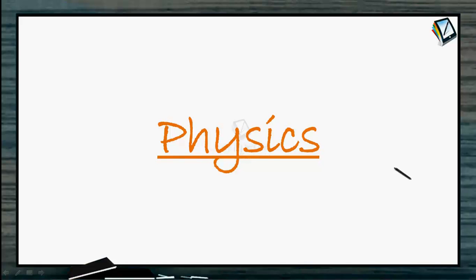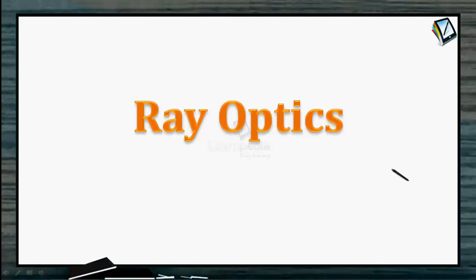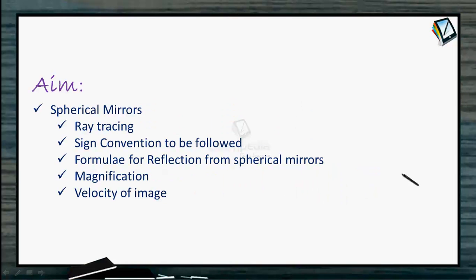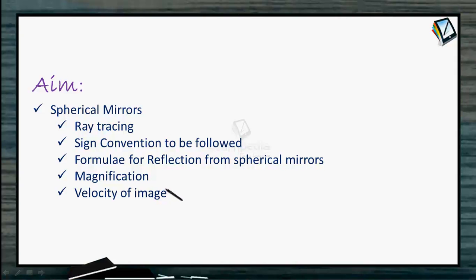Hello, welcome to the physics video tutorials. This is Ray Optics session 5, 6 and 7. In this particular tutorial, we are going to learn about the spherical mirrors and everything related to them — for example, ray tracing, sign convention to be followed if you want to solve the problems, formulae for reflection from spherical mirrors, formulae for the magnification and velocity of image in relation with the velocity of object. So these are the things we are going to cover about the spherical mirror.